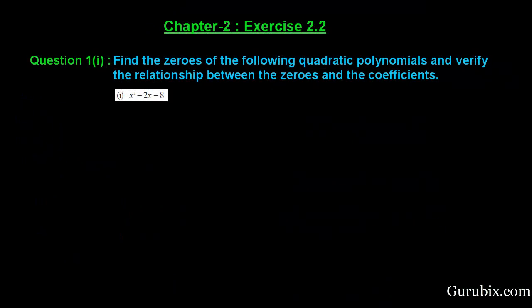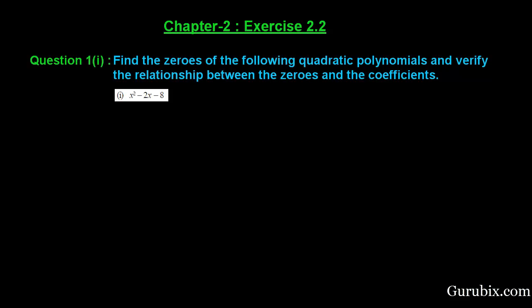Welcome friends. Let us solve the first part of question number 1 of exercise 2.2 of chapter 2. The question says: find the zeros of the following quadratic polynomial and verify the relationship between the zeros and the coefficients. The given polynomial is x squared minus 2x minus 8.